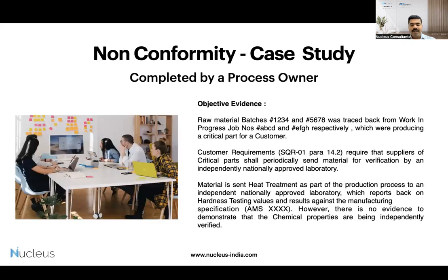So this is the non-conformity observed in an audit. Raw material batches 1–8 were traced back from work-in-process jobs A–H, which were producing a critical part for a customer. The customer requirement — supplier quality requirement para 14.2 — requires that suppliers of critical parts shall periodically send material for verification by an independently nationally approved laboratory. The material is sent for heat treatment as part of the production process to an independent nationally approved laboratory, which reports back on hardness values against manufacturing specification AMS XXXX. However, there is no evidence to demonstrate that the chemical properties are being independently verified. This is the non-conformity.